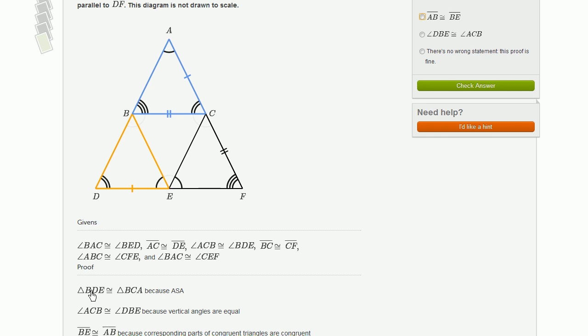You have your double arc angle, then your single side, and then your single arc angle. Double arc angle, single slash side, and then single arc angle. So you have angle, side, angle. It is legitimate. This is a legitimate statement here. That's not going to be incorrect.